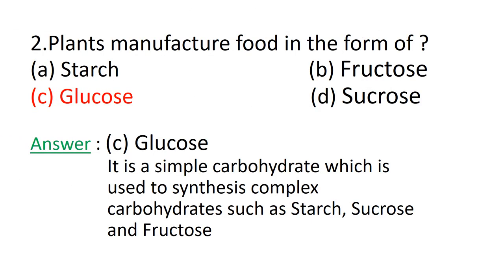Question number 2: Plants manufacture food in the form of — A) starch, B) fructose, C) glucose, D) sucrose. Glucose is a simple carbohydrate which is used to synthesize complex carbohydrates such as starch, sucrose, and fructose. Hence option C, glucose, is the correct answer.